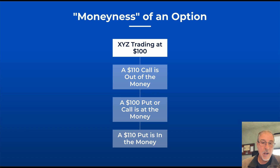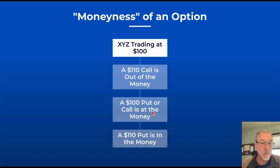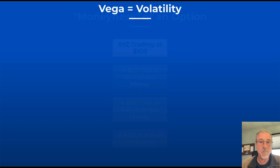To further help explain this, take the example of XYZ stock trading at $100. A $110 call is going to be out of the money. A $100 put or call is going to be at the money. A $110 put is in the money.